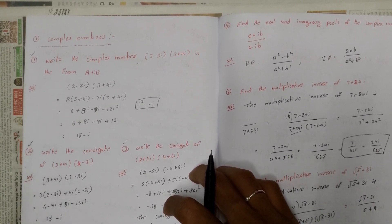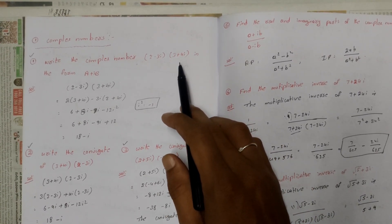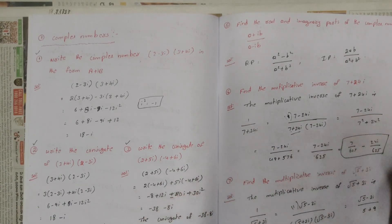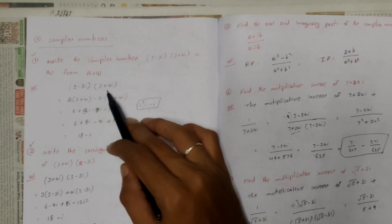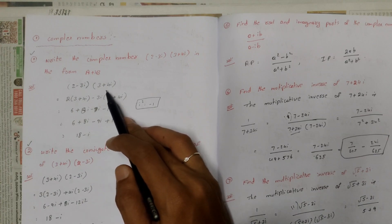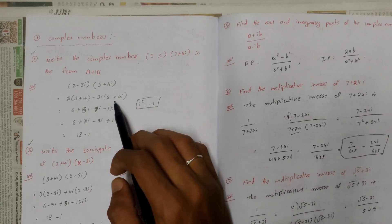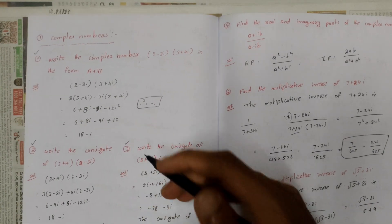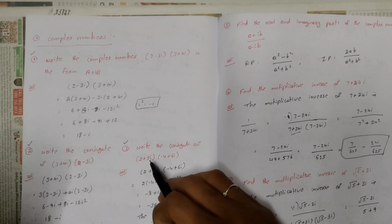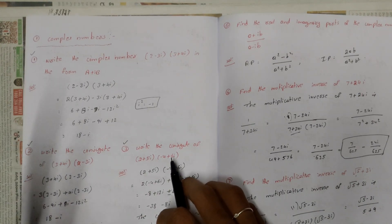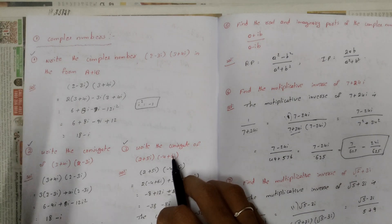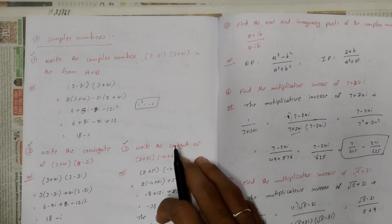First question: write the complex number (2−3i)(3−4i) in the form a+ib. Expand: 2 into (3+4i) minus 3i into (3+4i). Multiply it out, using i²=−1. The calculations are very important — make sure to apply i²=−1 correctly when multiplying.